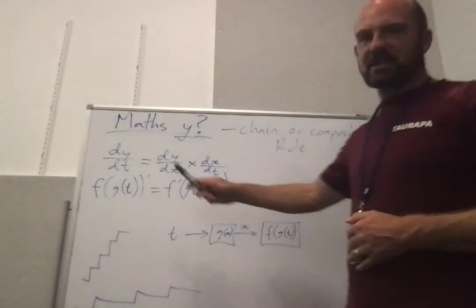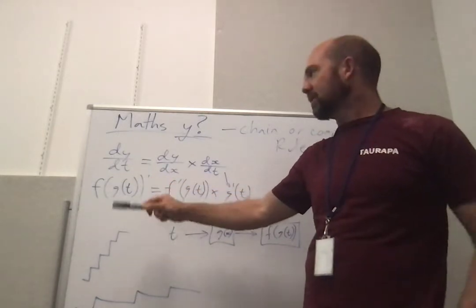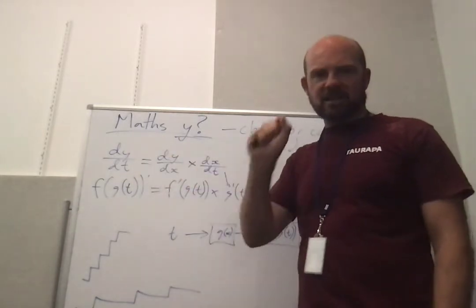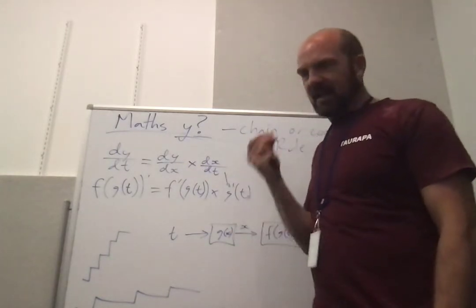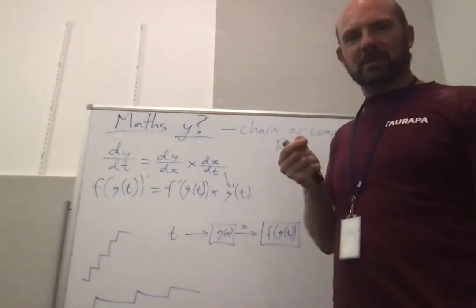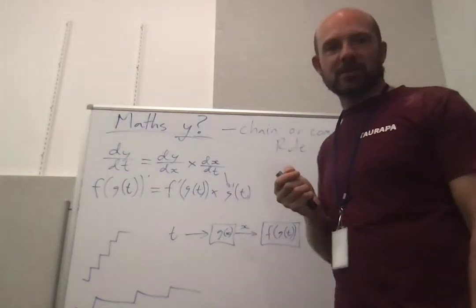When we write it as the chain rule we tend to be using Leibniz notation, and let's just see what it's saying within a context that we all understand. So hopefully most of you will be familiar with stairs. Personally I don't trust them because they're always up to something.